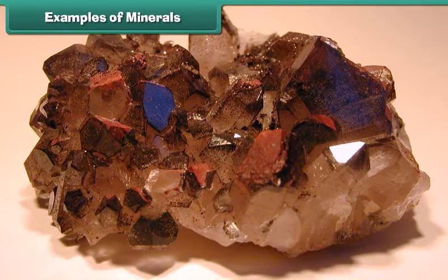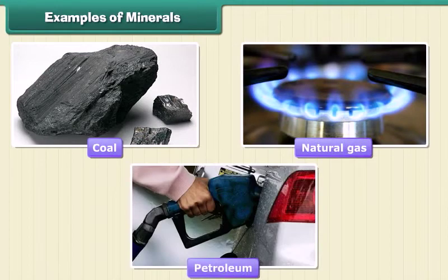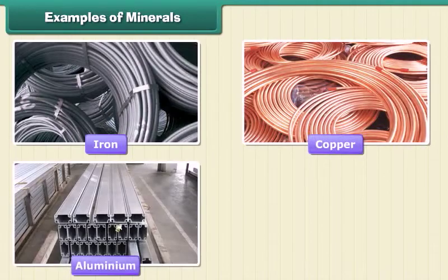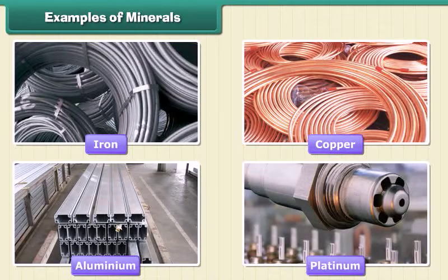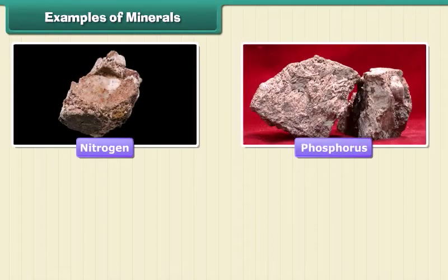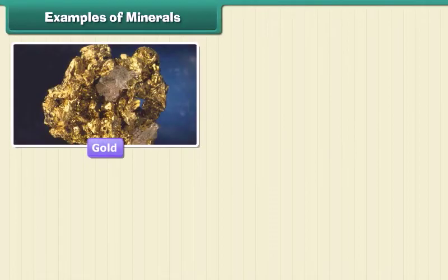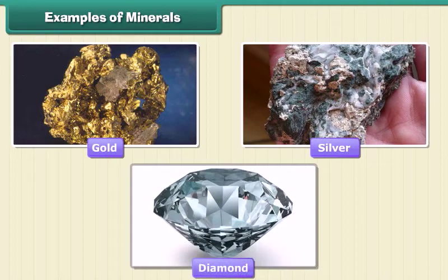Examples of minerals: Minerals are very important to humankind. Some minerals are used as fuels, for example coal, natural gas, and petroleum. Some are used in industries, like iron, copper, aluminium, platinum, etc. Minerals like gold and lithium are used in medicines. Nitrogen, phosphorus, and potassium are used in fertilizers. Gold, silver, and diamond are used in jewelry.